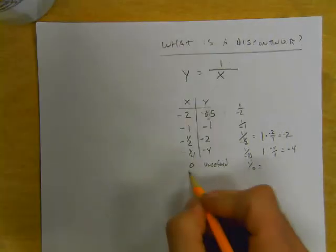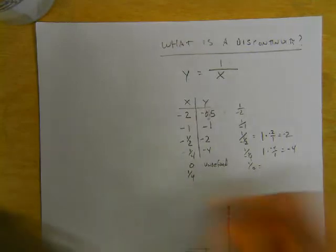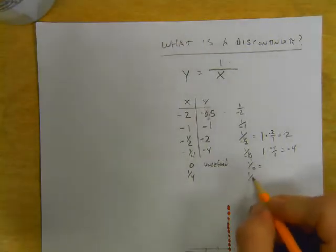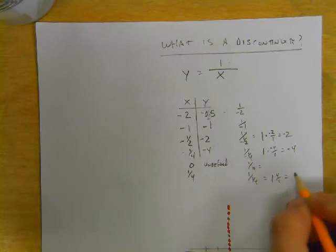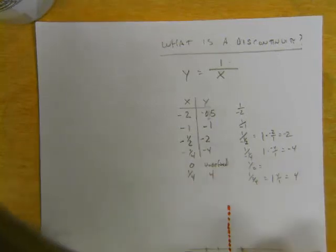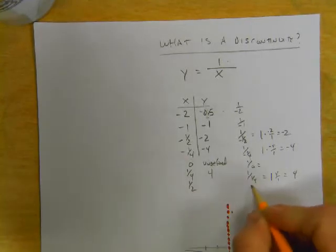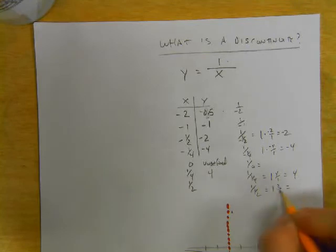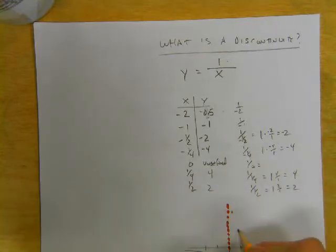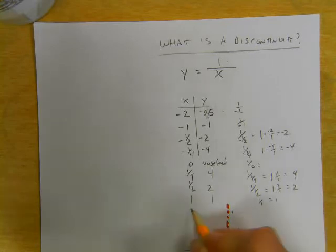What happens when we go positive? If we do a quarter, 1 divided by a quarter, you multiply by the reciprocal, you get 4. So a quarter is going to be 4. If you plug in a half, it's 1 divided by a half, which is 1 times 2. So now we have 1, we've got 2. If you plug in the number 1, 1 over 1 is 1. So that's going to be like right there. If you plug in a 2, you're going to get a half, which is right there.